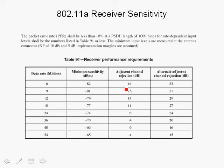Of particular interest are the adjacent channel rejection specifications. At 6 megabits per second, the adjacent channel could be up to 16 dB higher in power than the desired channel, and we still have to meet our minimum sensitivity requirements even in the presence of an adjacent channel. Vendors can actually beat this performance.